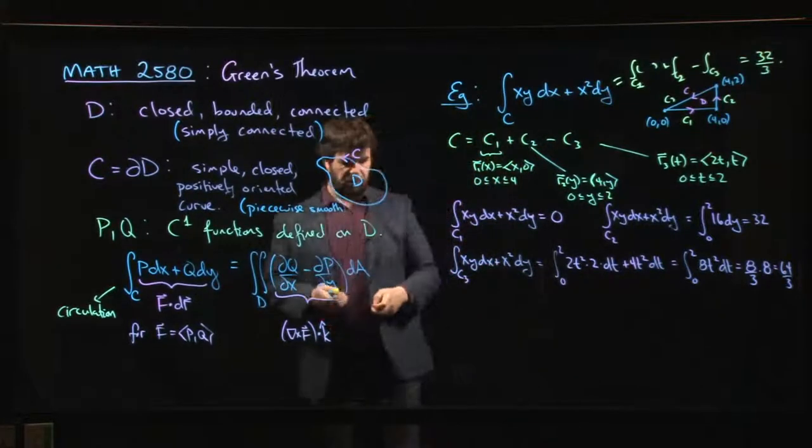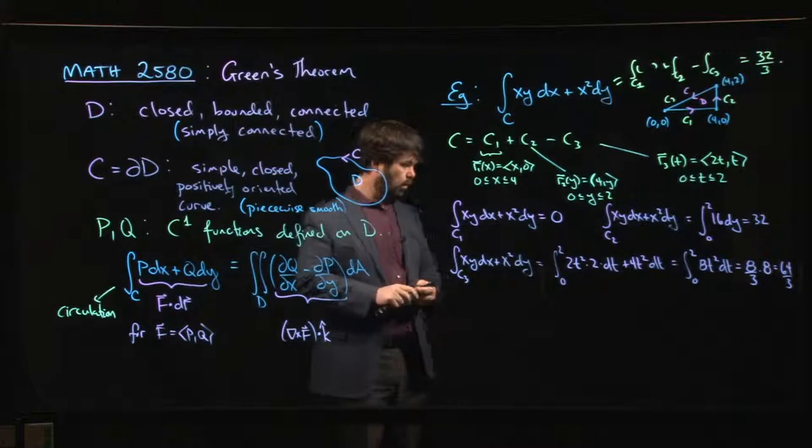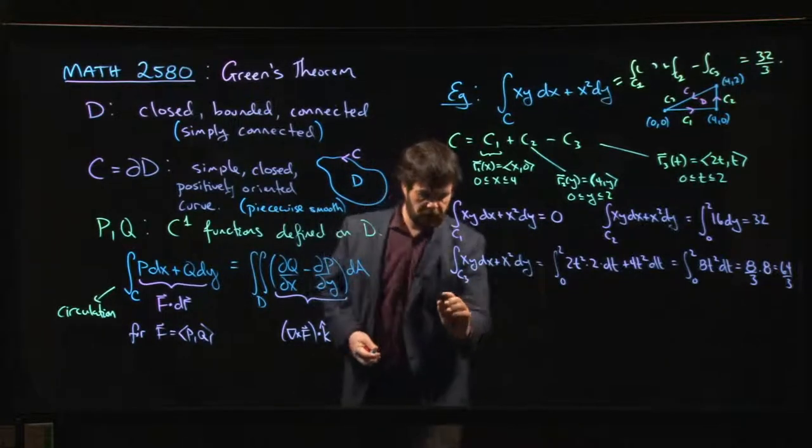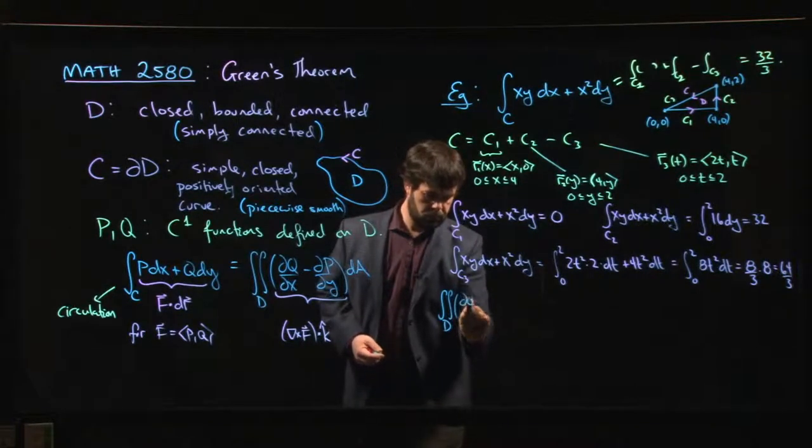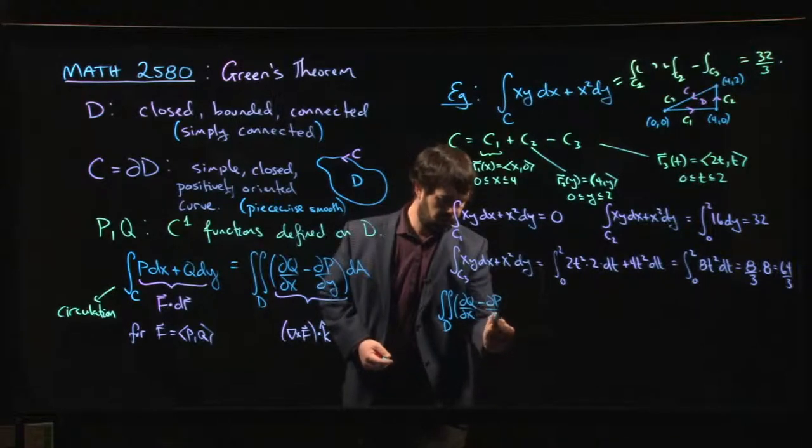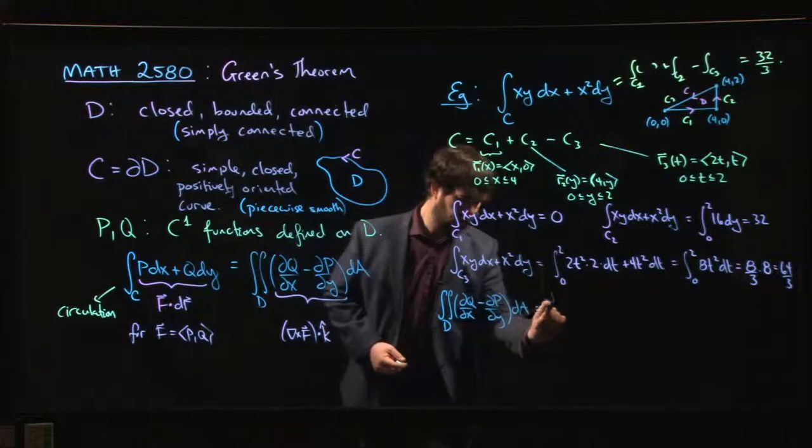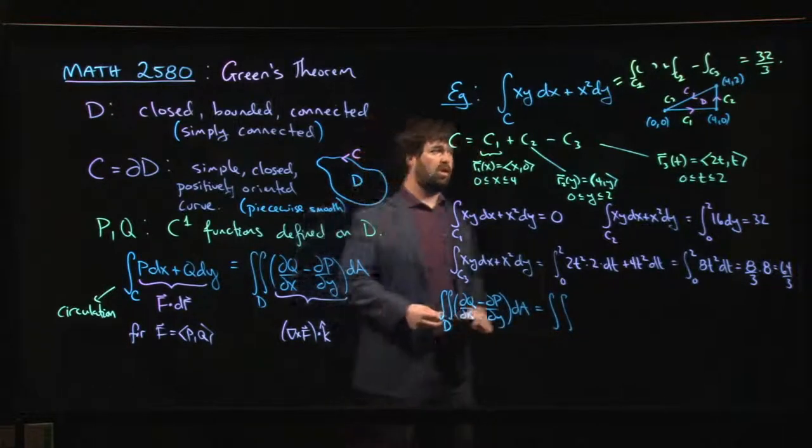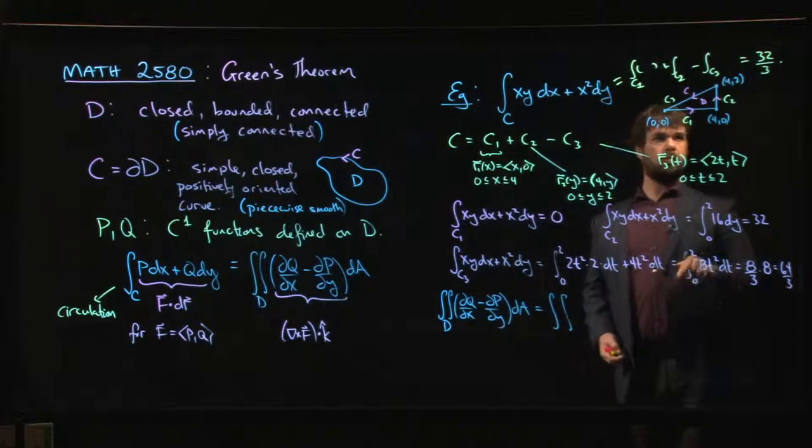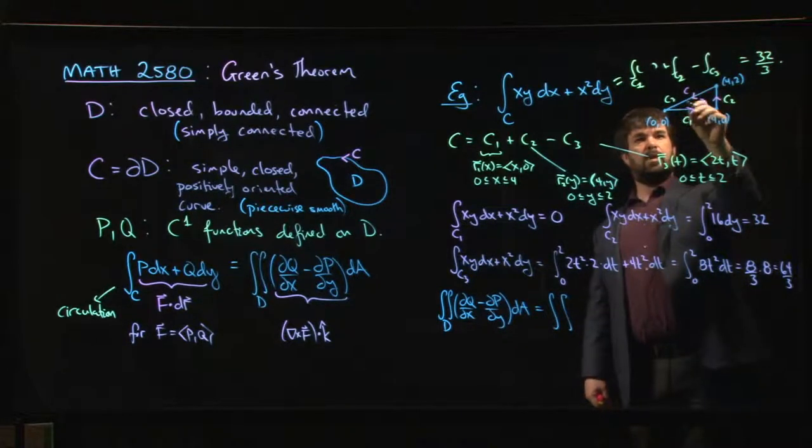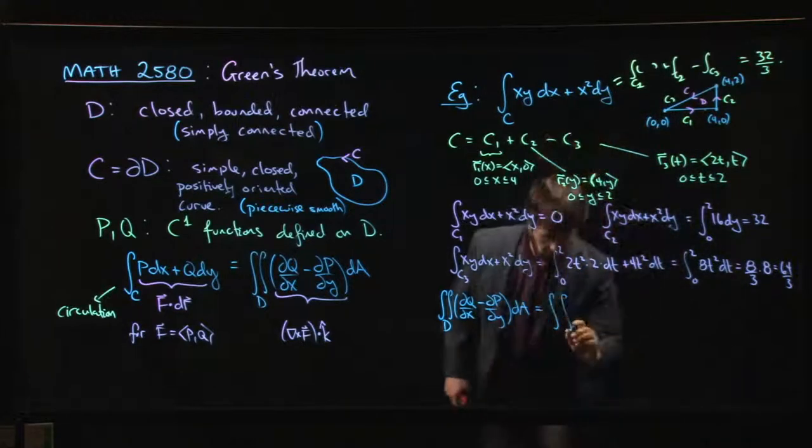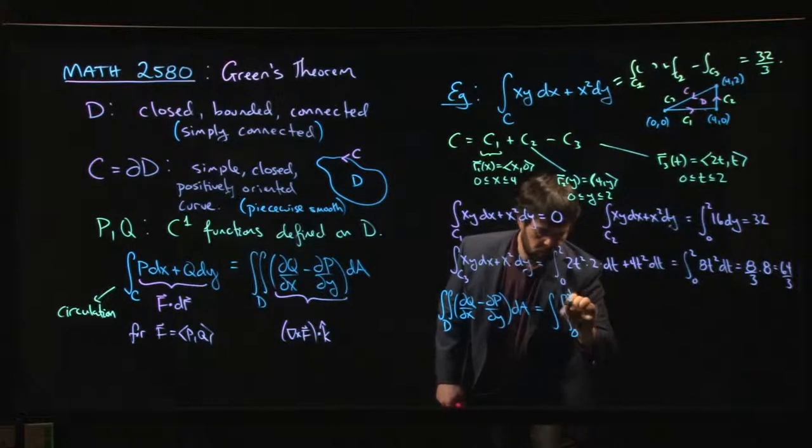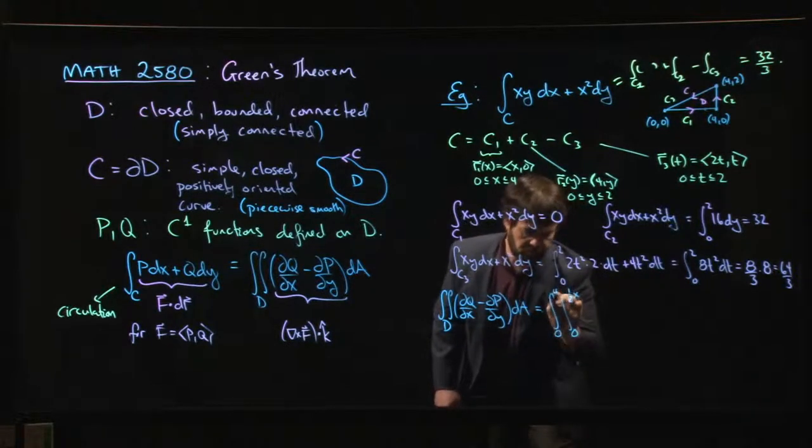What if we do the other side? What if we do this version of Green's theorem, the right-hand side of the equation. See if it works. Let's check and see. So on the other hand, the integral over D, dq dx minus dp dy. So let's see. If I was going to describe this region here, I would probably say that y goes from 0 to 1 half x, with x going from 0 to 4. So y goes from 0 to half x, x goes from 0 to 4.